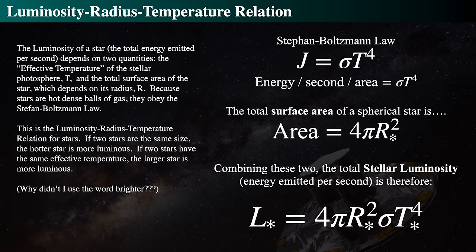This is the luminosity-temperature relation for all stars: luminosity is proportional to radius squared times temperature to the fourth power. If two stars have the same radius, the hotter star must be more luminous. If two stars have the same temperature and one is larger, it's more luminous. Note the word 'luminous,' not 'brighter' — brightness depends on distance. Luminosity is the total energy output. Stars are intrinsically luminous but far away, so they look dim. This is the relationship between total energy output, size, and surface temperature.